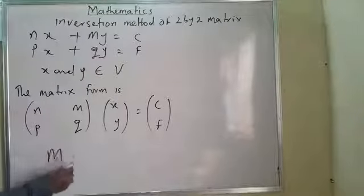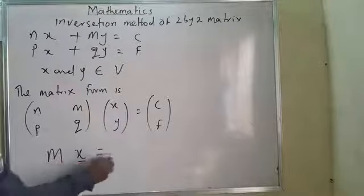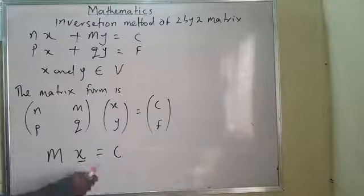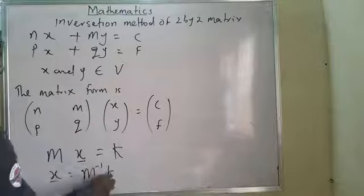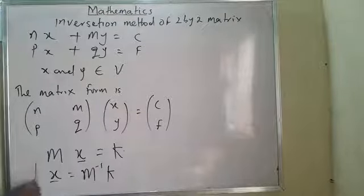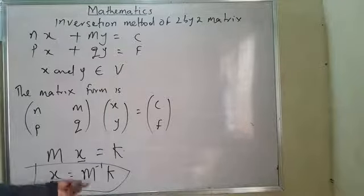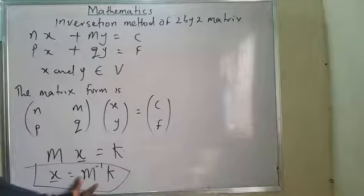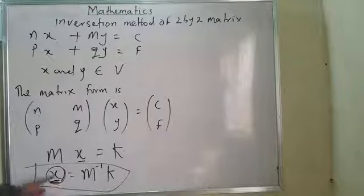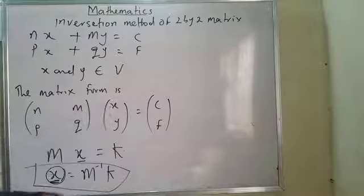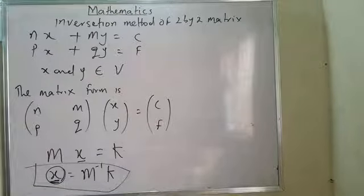I call this: matrix × vector = constant K. To find the variable vector, I make it the subject: vector = M⁻¹ × K. So to generate my variables I must first find the inverse of the coefficient matrix. That is what the inversion method is about.